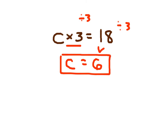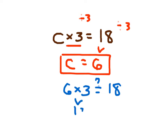Does 6 times 3 equal 18? Plugging 6 back into our original equation: 6 times 3 is 18, and 18 does equal 18 — check mark. If this check did not work, then I'd know there was something wrong with my work. So again, the big thing is inverse operation.